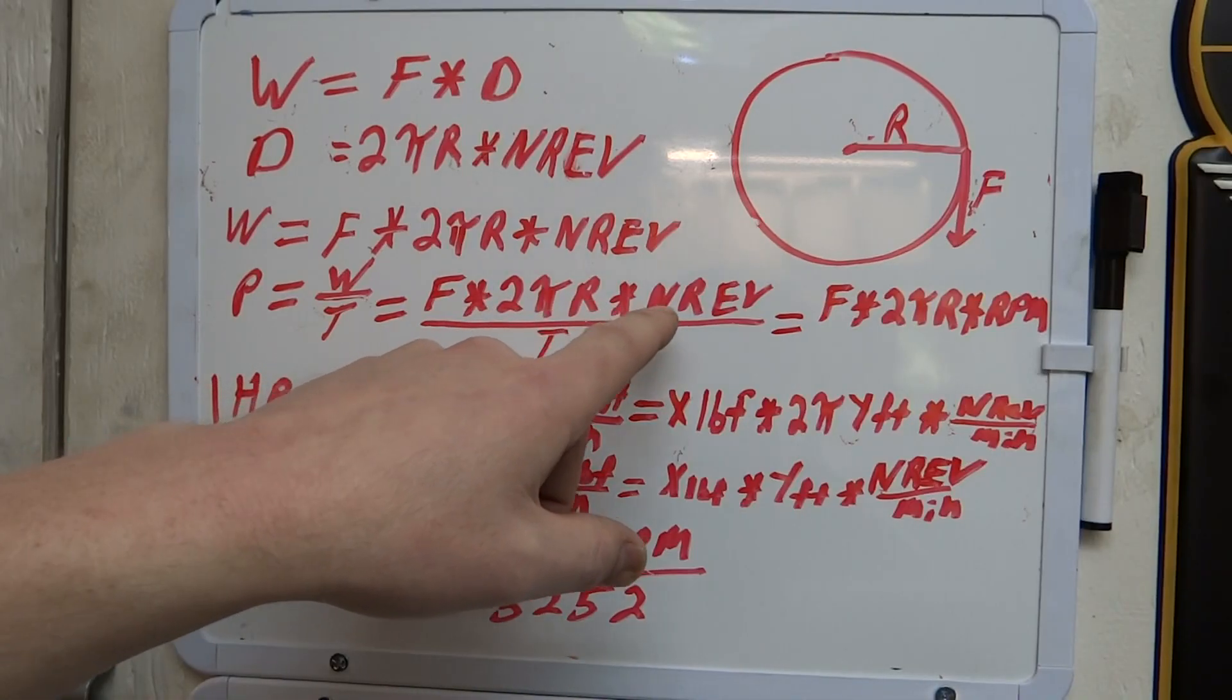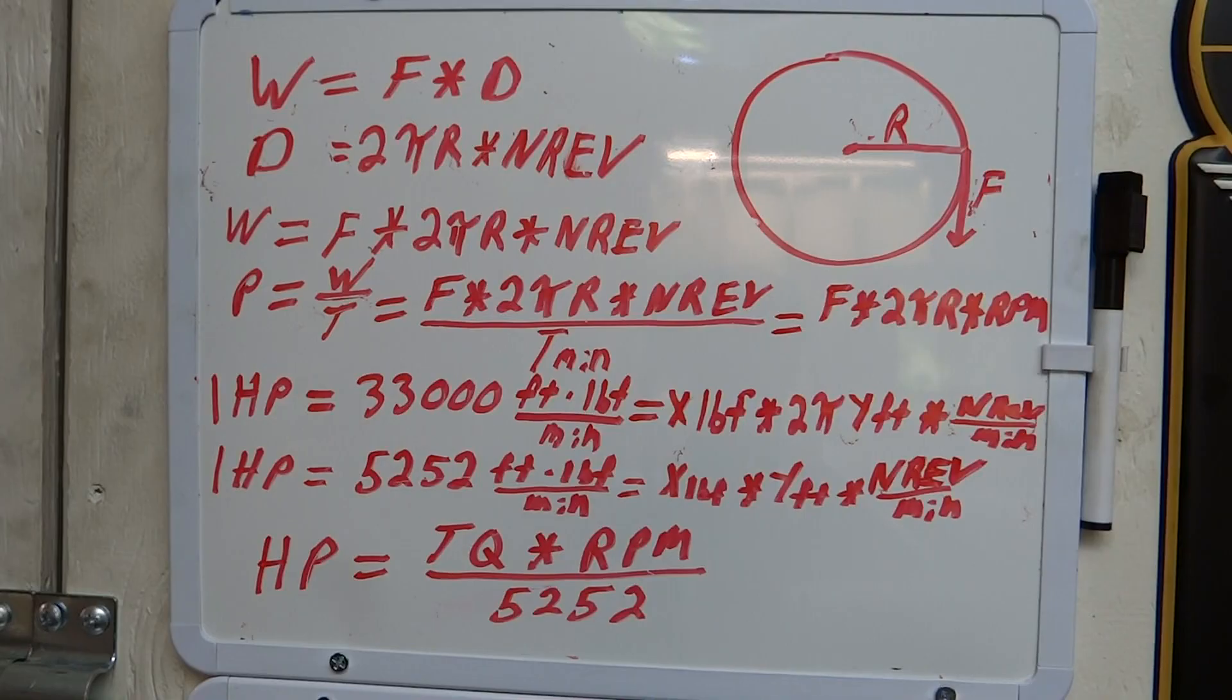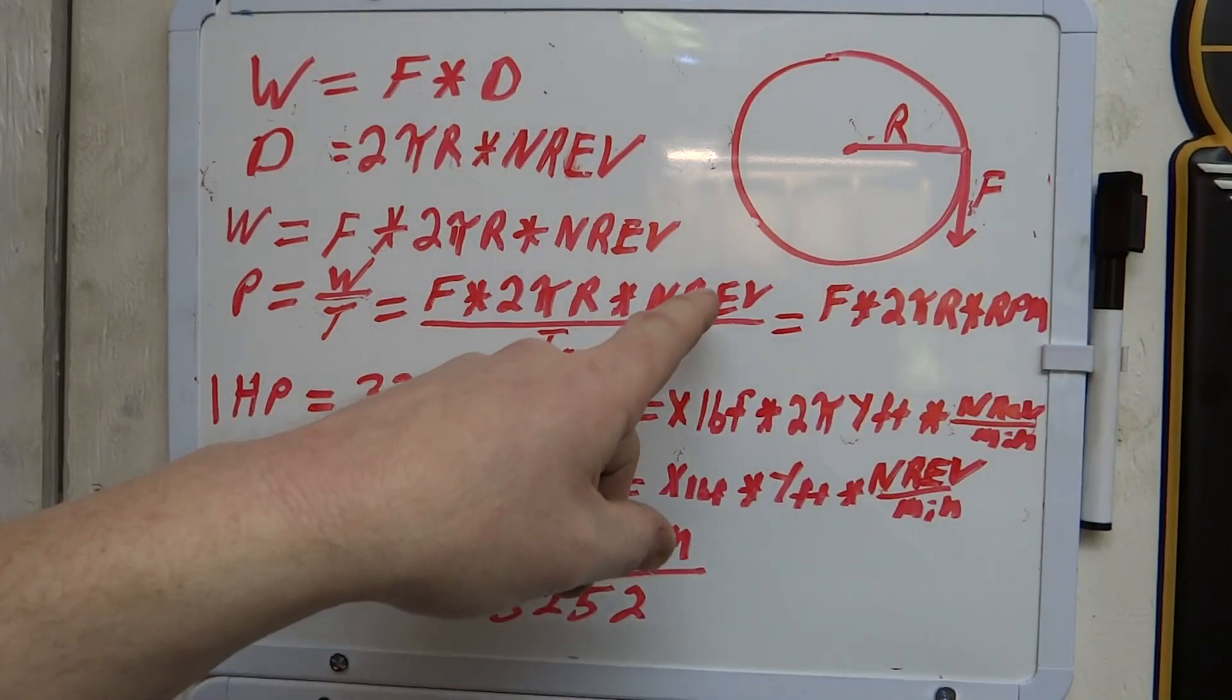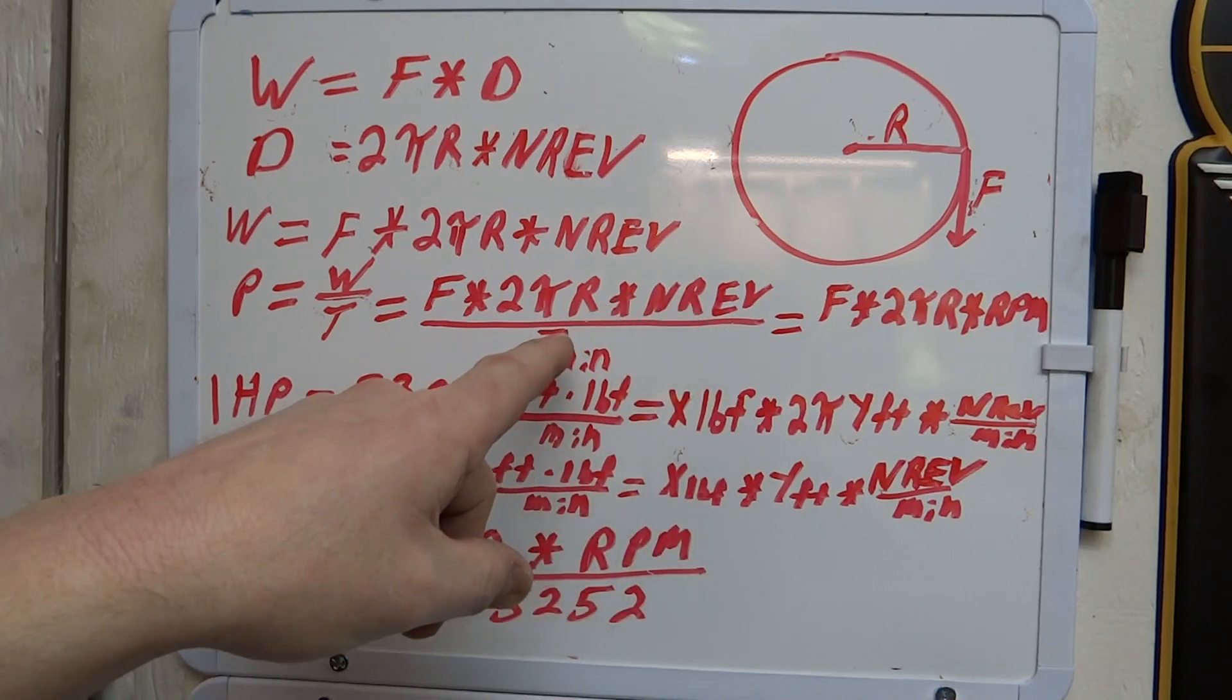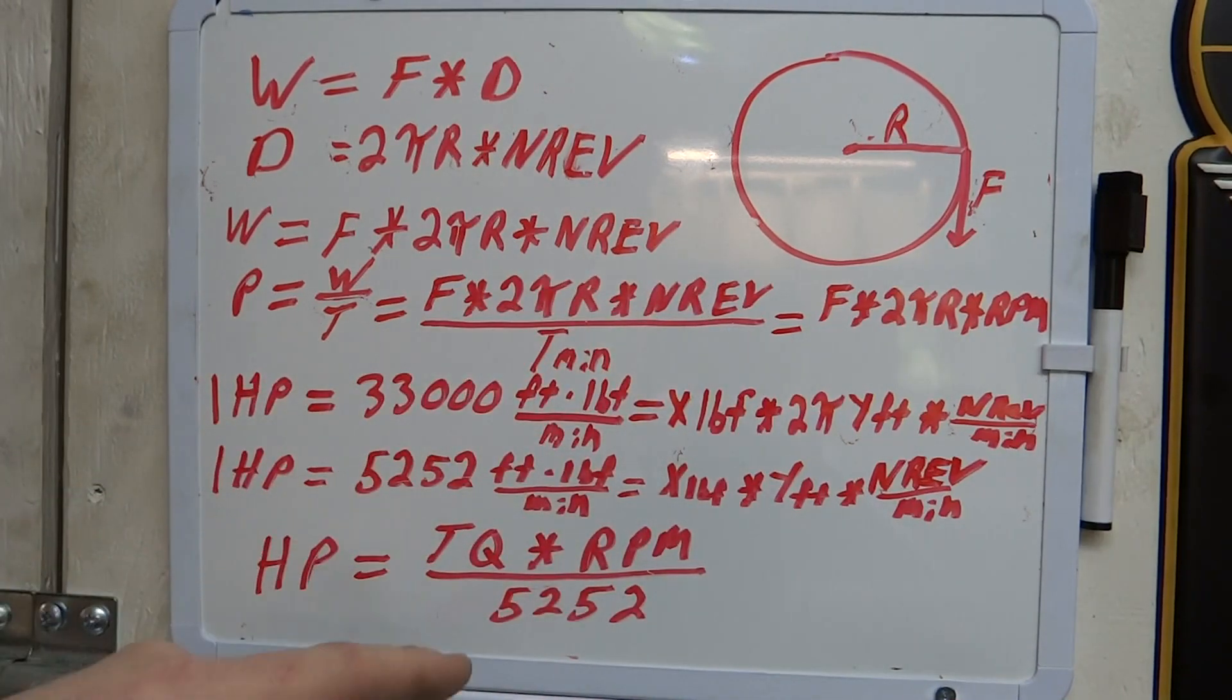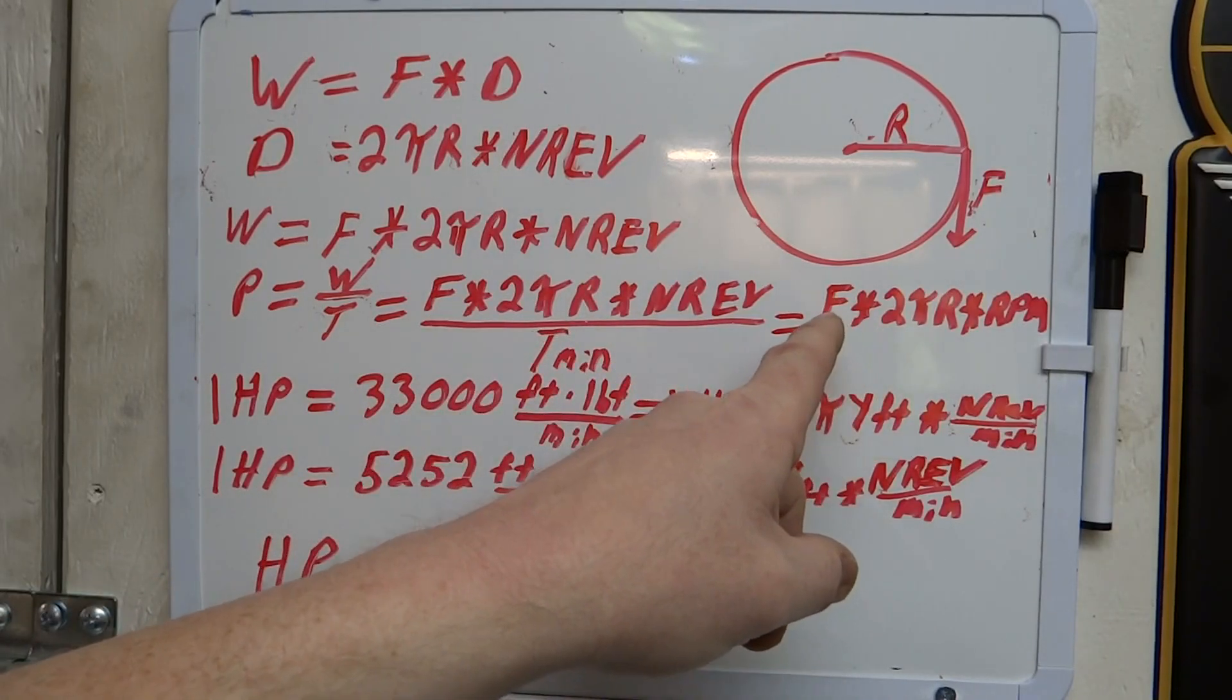It's okay to do what I'm going to do here. You have revolutions per minute, right? So we can represent that portion of it in terms of RPM. So we can rewrite this over here as force times 2πR times RPM.